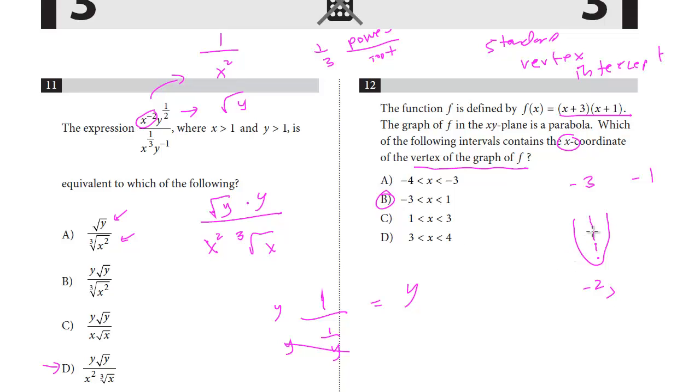But we already have this in intercept form. Once you get the x, all you have to do is plug it into both because it's the midpoint. So we're going to plug in a negative 2 here and a negative 2. So negative 2 plus 3, that's going to be positive 1. And then negative 2 plus 1 is negative 1. And you multiply negative 1 times 1, we know that the y-coordinate would be negative 1.